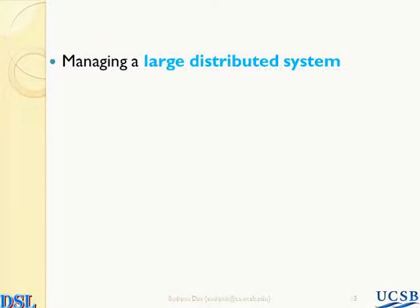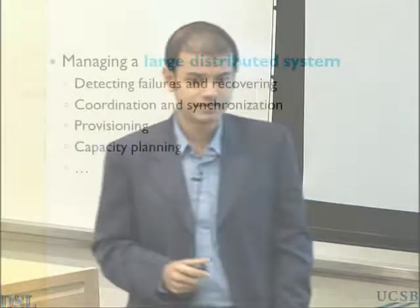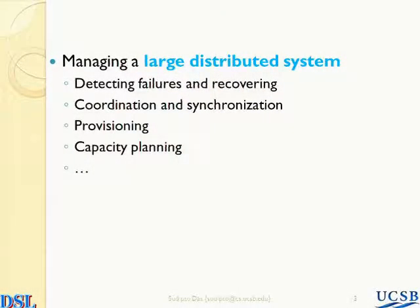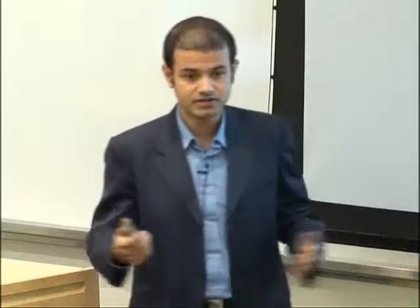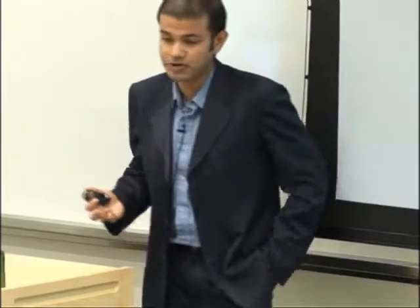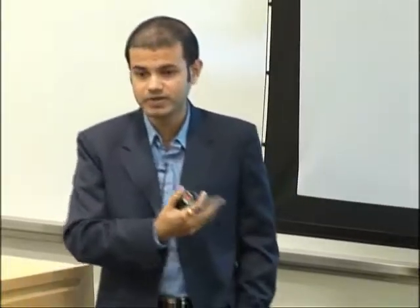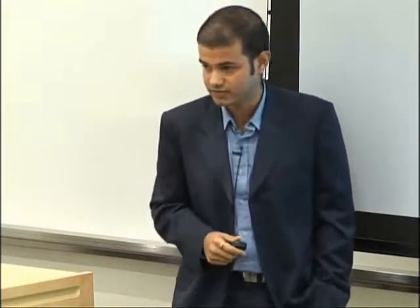Last but not least, managing these systems is often a pain. Why? Because as you go to scale, failures become a norm rather than an exception. Detecting and recovering from failures, coordination and synchronization between a cluster of nodes, how do you provision these systems, how do you do capacity planning — the laundry list essentially continues. There's a quote from the famous open source system Zookeeper that says a large distributed system is essentially a zoo, and that's why you need a zookeeper for automating a lot of these guarantees.